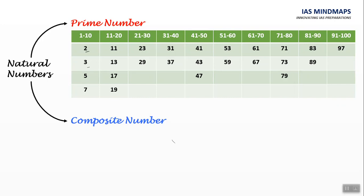2, 3, 5, 7, 11, 13, 17, 19, 23, 29, 31, 37, 41, 43, 47, 53, 59, 61, 67, 71, 73, 79, 83, 89 and 97.